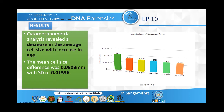Coming to the results, through the morphometric analysis, there was a decrease in the average cell size with the increase in age. The mean cell size difference was 0.0808 µm, with a standard deviation of 0.015. As you can see from the graph, there is a steady decrease in average cell size, starting from 0.11 to 0.06 µm.